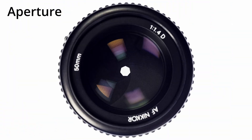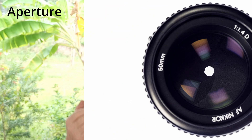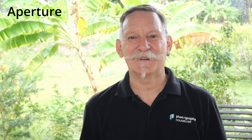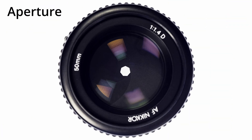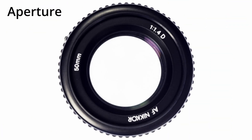The aperture is a diaphragm in the lens that functions very similarly to the way the iris in our eyes functions. When it's bright, our iris is small because we need less light coming in. At night or in dark places, our iris opens up because we need as much light as possible. In bright light situations you'll want a narrower aperture, and in darker situations a wider aperture because it lets more light into the camera.